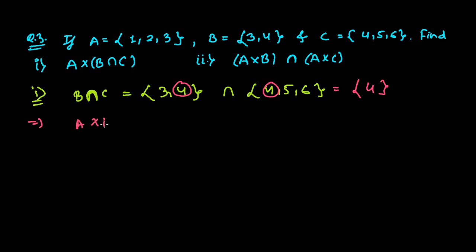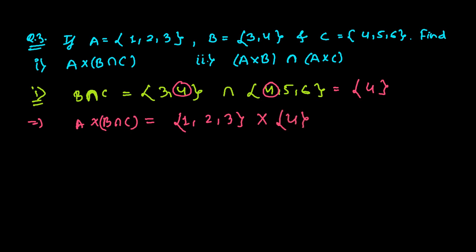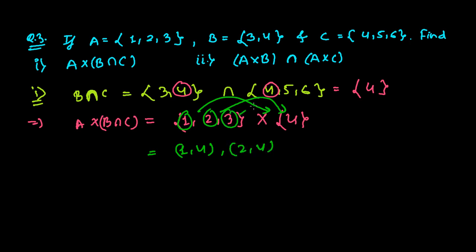Now we can find A cross (B intersection C). A contains elements 1, 2, 3, and B intersection C is {4}. The Cartesian product means pairing each element: 1 pairs with 4 giving (1,4); 2 pairs with 4 giving (2,4); and 3 pairs with 4 giving (3,4). That's our solution for the first question. Now let's jump to the second question.